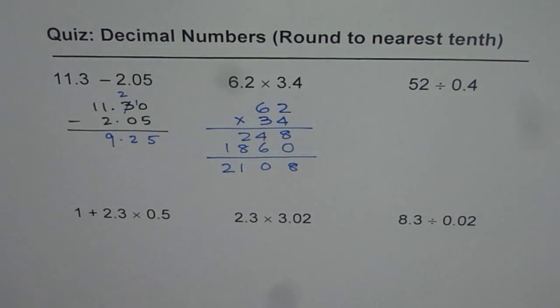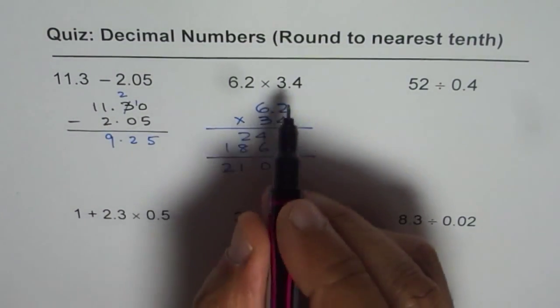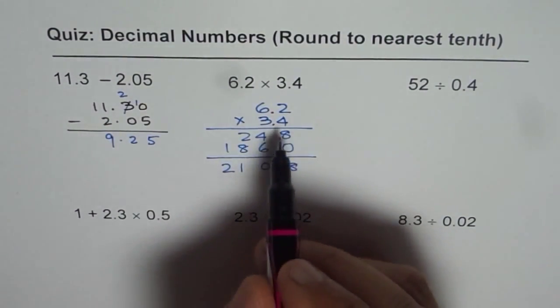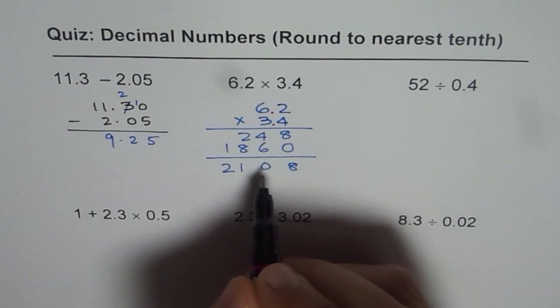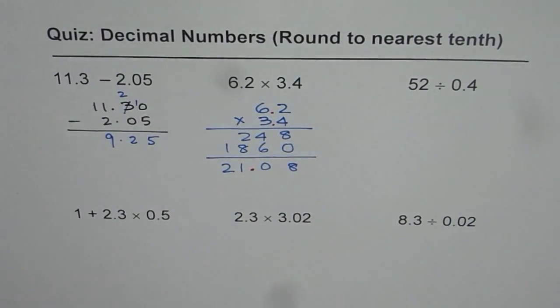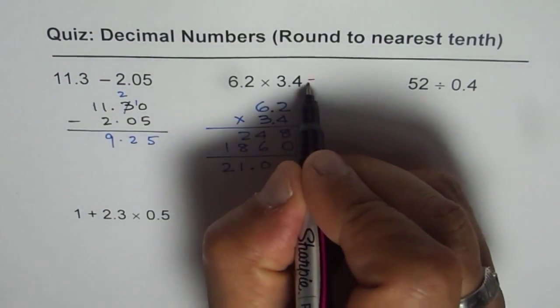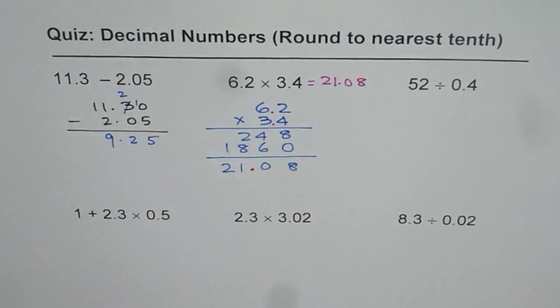Now we have to bother about the decimal. Strictly speaking, the numbers were 6.2 and 3.4. So there are 2 numbers after decimal. Therefore, in the solution also, we should have 2 numbers after decimal. So 21.08 is the answer.